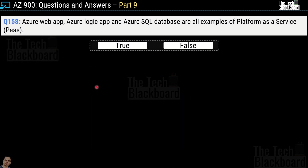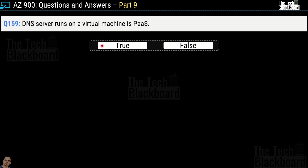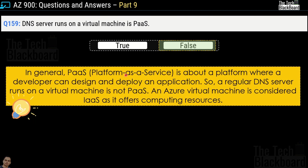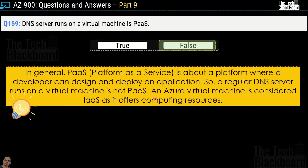Question number 158: Azure Web App, Azure Logic App, and Azure SQL Database are examples of Platform as a Service — true or false? This is a true statement, as we saw earlier. Question number 159: a DNS server running on a virtual machine is Platform as a Service — true or false? This is false. PaaS is a platform where a developer can design and deploy an application. A DNS server on a virtual machine is not PaaS; Azure Virtual Machine is always considered IaaS.